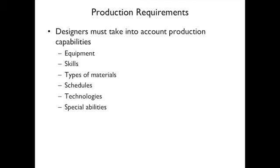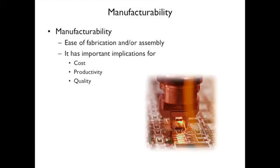Production requirements: whatever you're designing has to be able to be produced. What equipment, skills, materials, schedules, technologies, and special abilities are needed? Manufacturability refers to how hard it is to make something for fabrication or assembly. If it's really hard, it will cost more and may result in lower quality. If it's easy to produce, you can reduce costs, produce more, and achieve better quality.